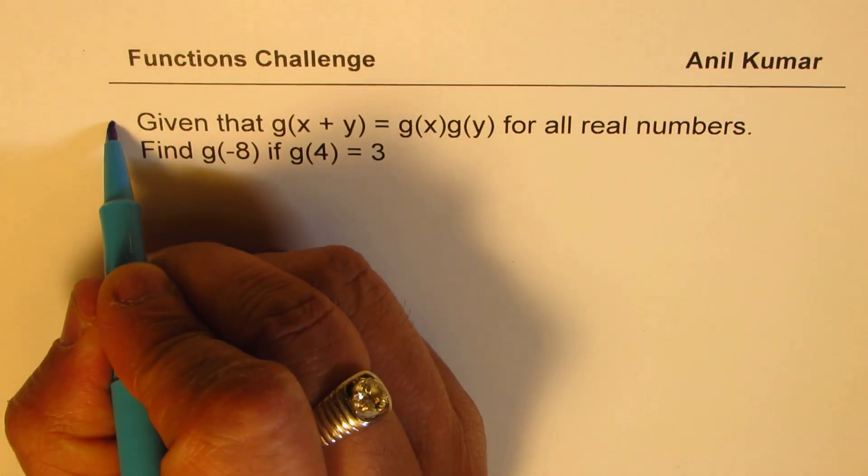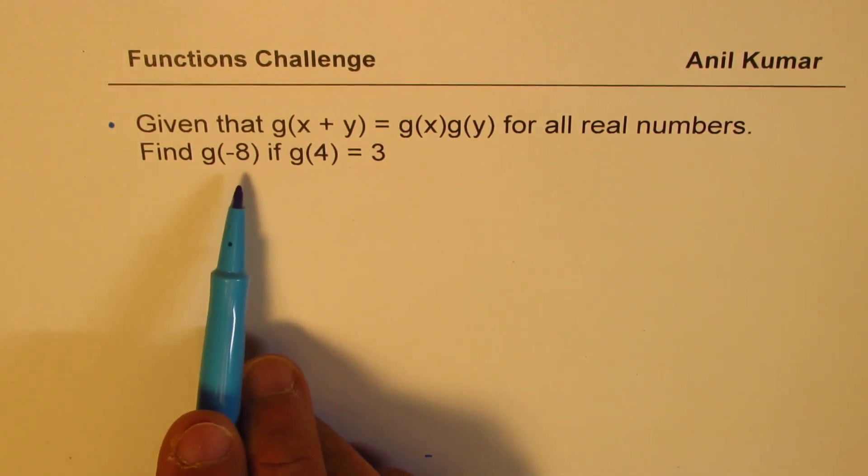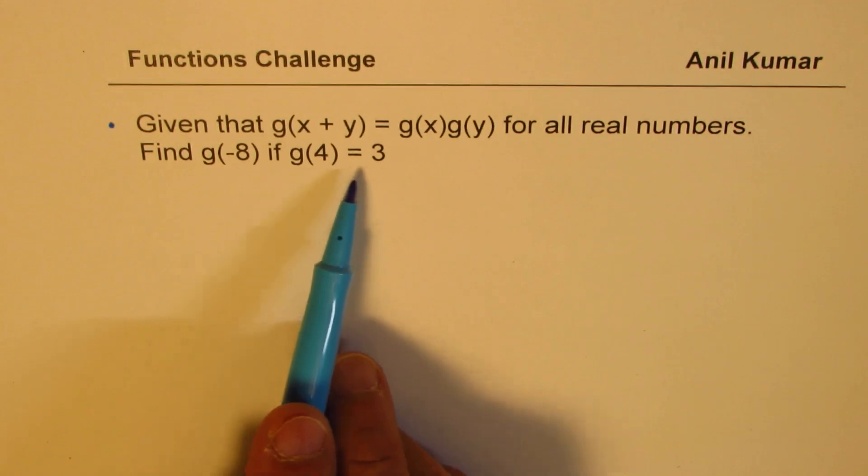The question here is, given that g of x plus y equals to g of x times g of y for all real numbers, find g of minus 8 if g of 4 is equal to 3.